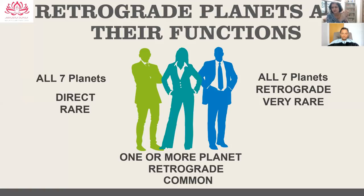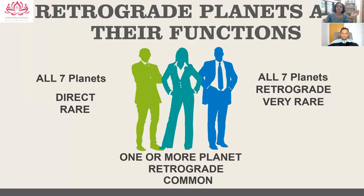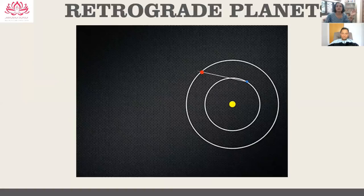When all seven planets are retrograde, that is an extremely rare phenomenon. Most of us are in the zone of one or more retrograde planets — that is the most common zone we reside in.